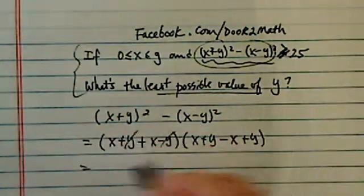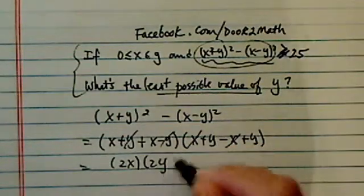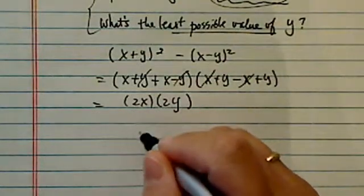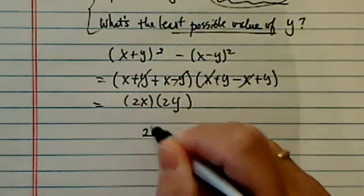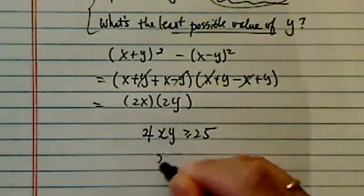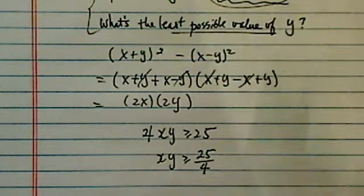But I choose to use difference of squares. So the first term plus second term times first term minus second term. From here I saw this one is 2x, and this one is 2y. This is x and y, basically. So the original equation translated into 4xy is bigger than or equal to 25, which we're saying xy is equal to this one.